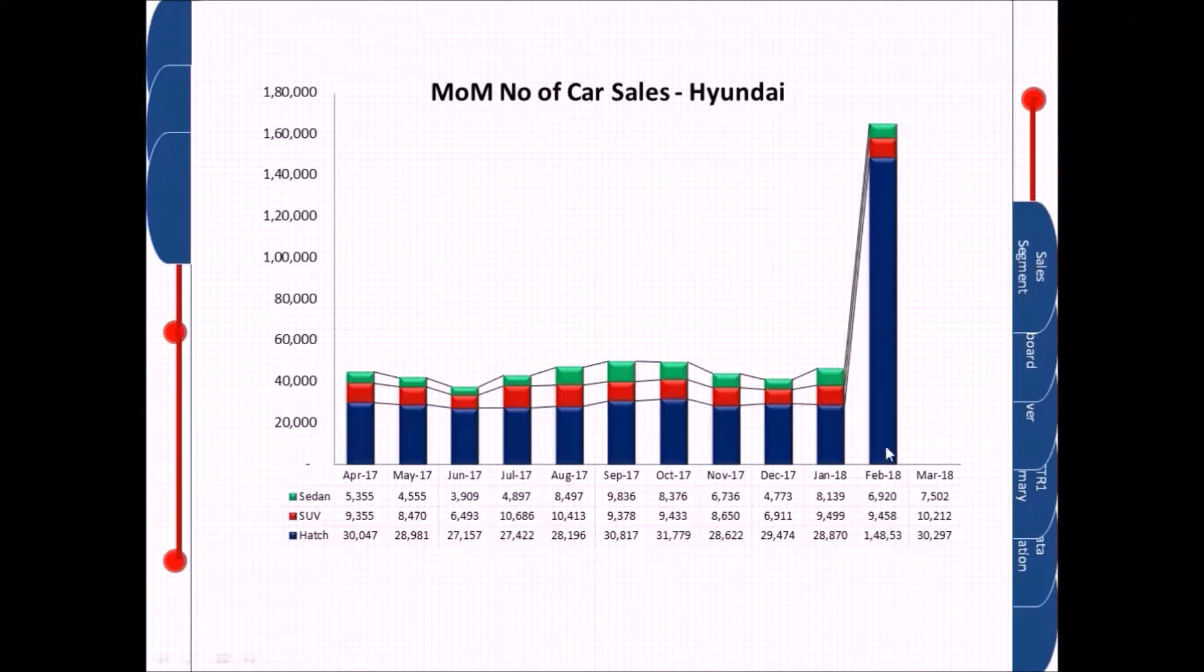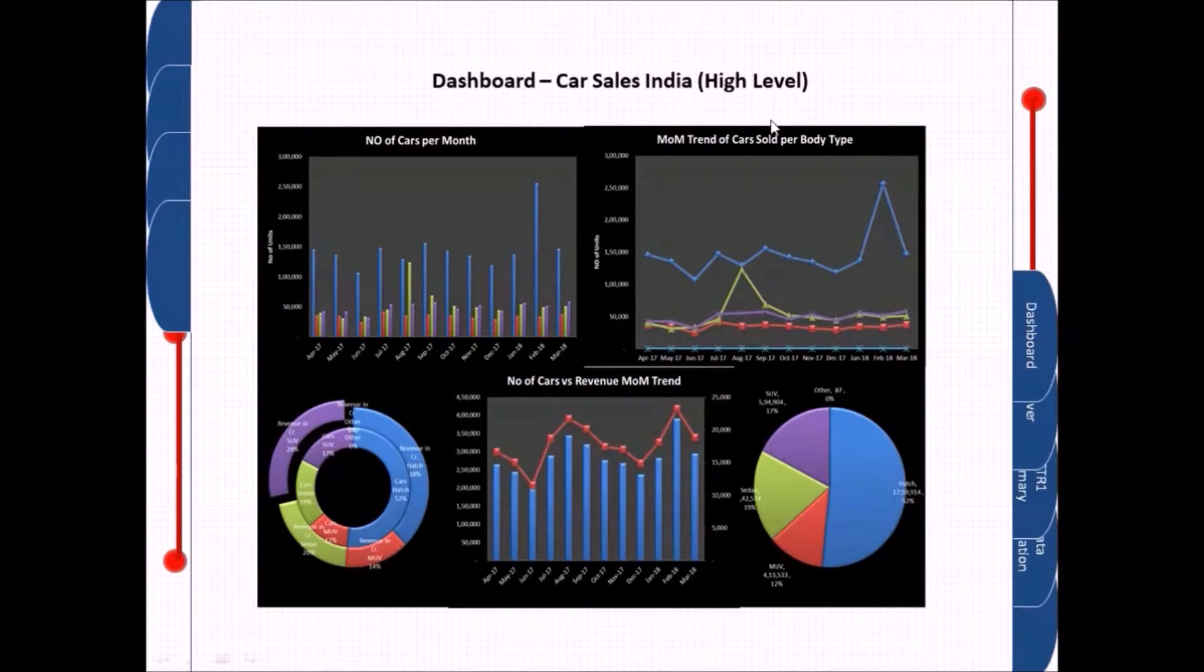Now month-on-month sales for a Hyundai car that I am showing over here. This is how you represent the impulses that we have. This is the dashboard showing number of costs per month, trend of body type, revenue share and cost share through a pie chart or a donut chart.